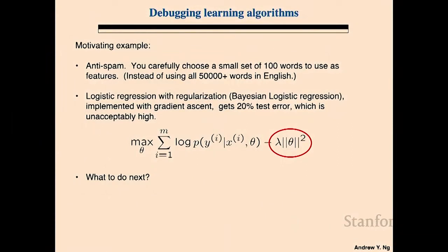Let's start with a motivating example. Let's say you're building an anti-spam classifier and you've carefully chosen a small set of 100 words to use as features — instead of 10,000 or 50,000 words, you've chosen 100 words you think are most relevant to anti-spam. You start off implementing logistic regression with regularization — also called Bayesian logistic regression — where you have the maximum likelihood term on the left and the regularization term on the right. Let's say logistic regression with regularization gets 20% test error, which is unacceptably high — you're making one in five mistakes on your spam filter.